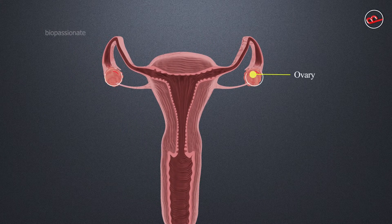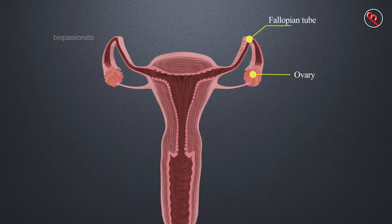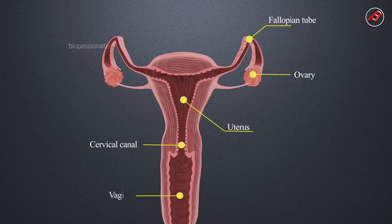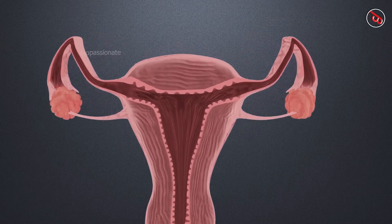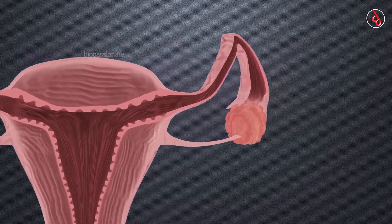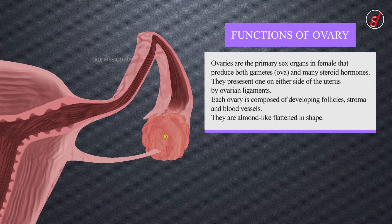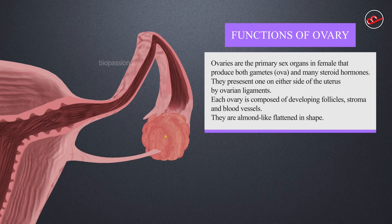Primary sex organs include a pair of ovaries. Accessory ducts include the fallopian tube, uterus, cervix, cervical canal, and vagina with an external vulva. Ovaries are almond-like flattened structures. A pair of ovaries are present on either side of the uterus. They take part in the production of female gametes called ova and many steroid hormones which regulate the menstrual cycle.